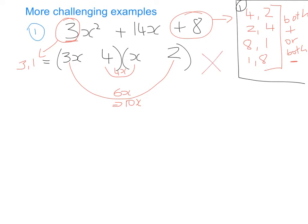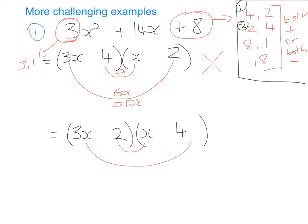We try option two: 2 in the first bracket and 4 in the second. Again 3x and x in the brackets. Smiley face: 2 times x gives 2x, and 3x times 4 gives 12x. Is there any way both positive or both negative gives our target? Yes — +2x plus +12x gives +14x, which is our required middle term. So we fill in plus and plus, giving us our factorized answer.